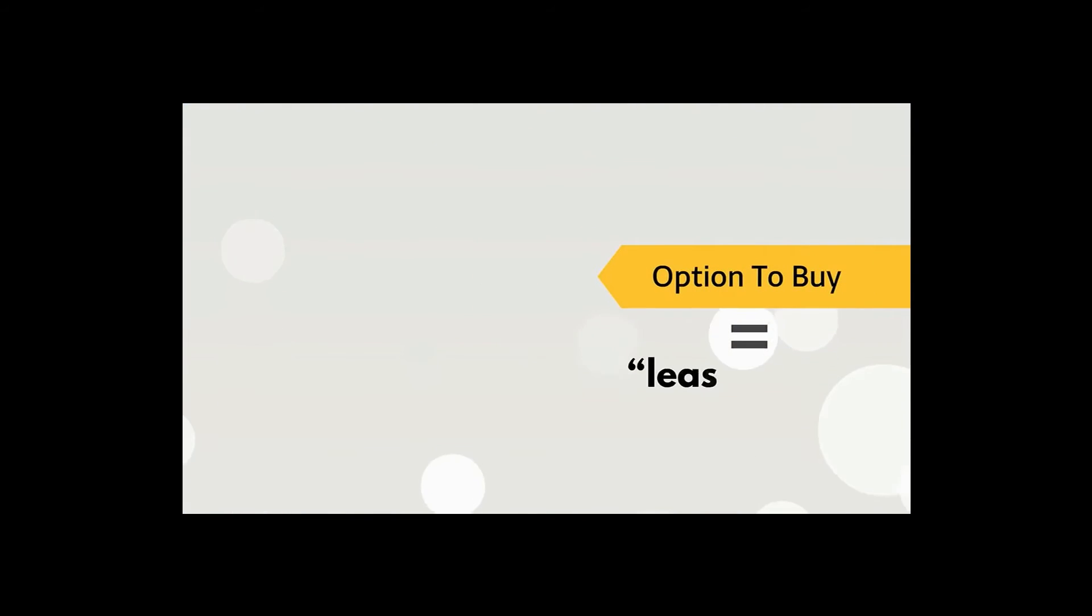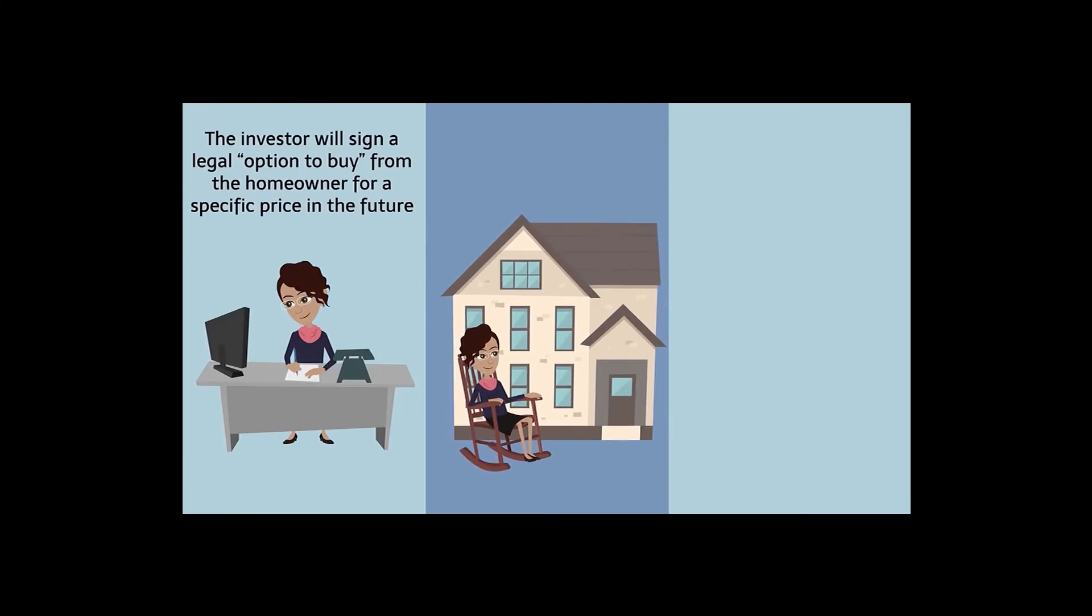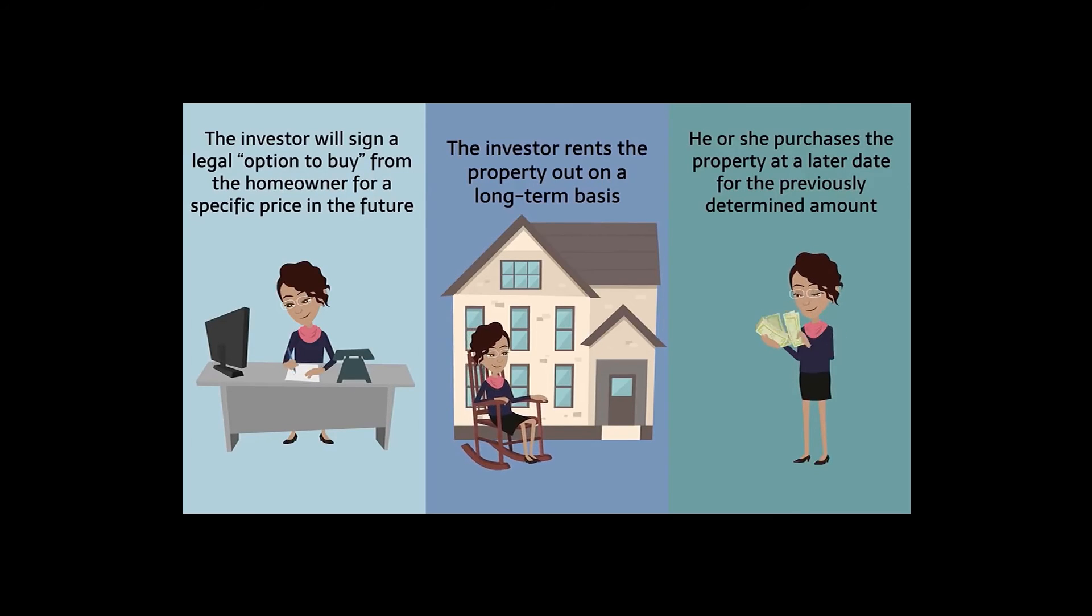An option to buy, also known as a lease option, allows investors to acquire properties without initially taking legal ownership. The investor will sign a legal option to buy from the homeowner for a specific price in the future, and in return, the investor rents the property out on a long-term basis until he or she purchases the property at a later date for the previously determined price.